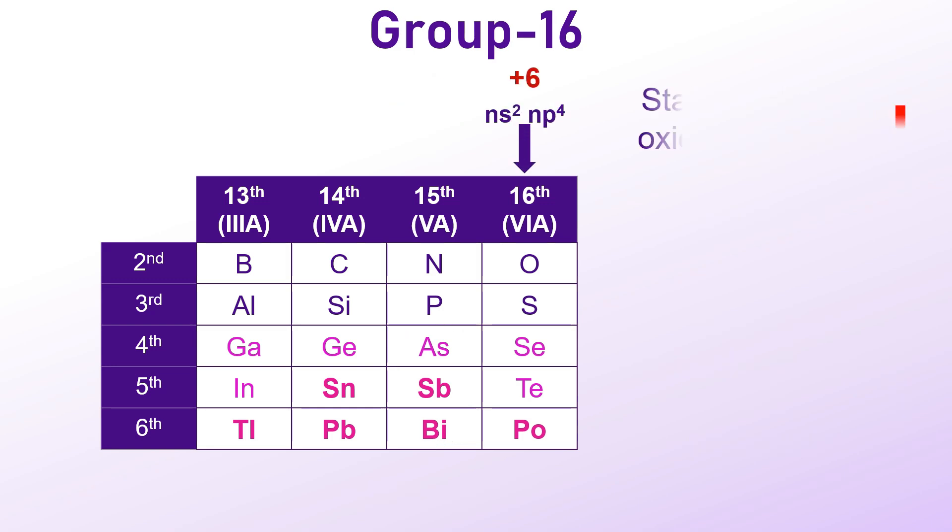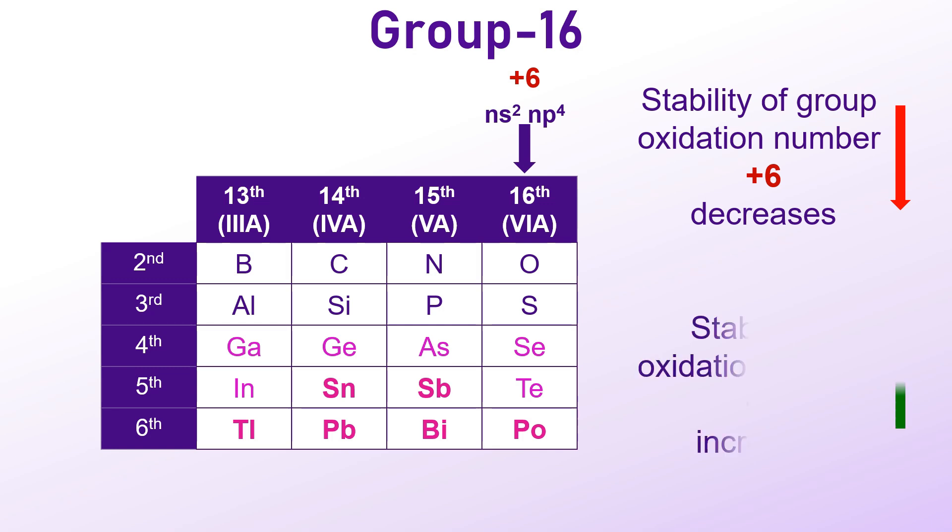In group 16, the stability of the group oxidation number +6 decreases down the group, while the +4 oxidation state becomes more stable. The heavier elements like selenium, tellurium and polonium show +4 oxidation state also.